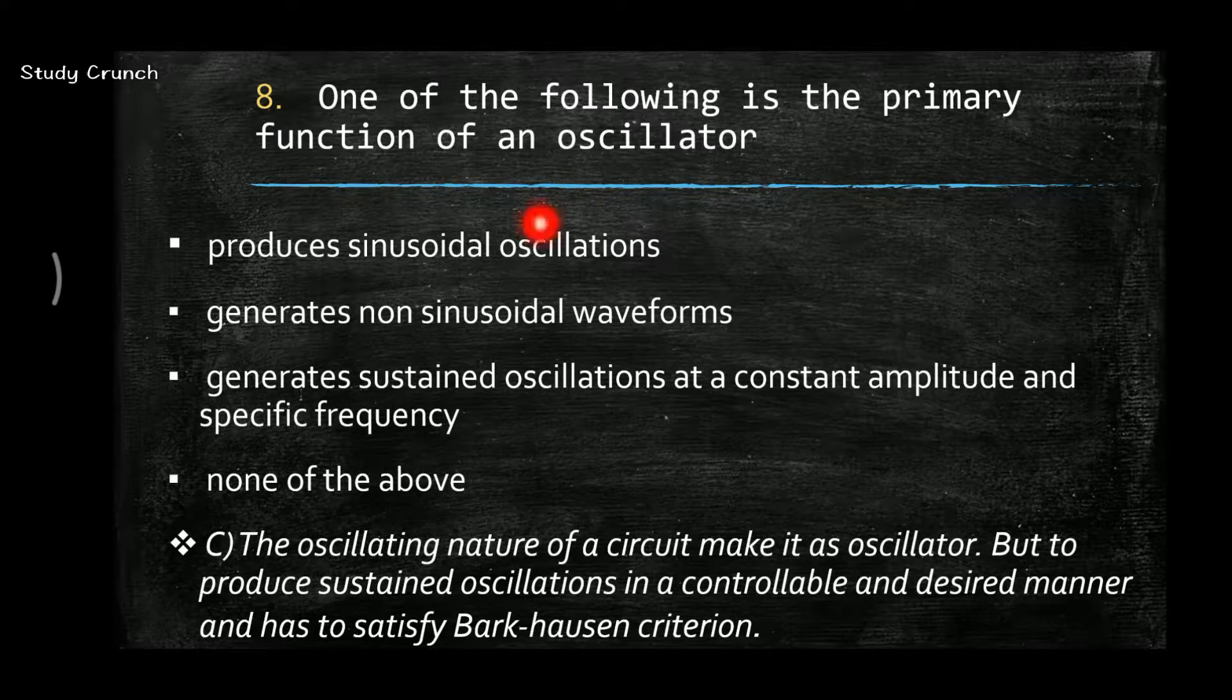Next, one of the following is the primary function of an oscillator. The primary function of oscillator is to generate sustained oscillation at constant amplitude and specific frequency. So the answer is C.